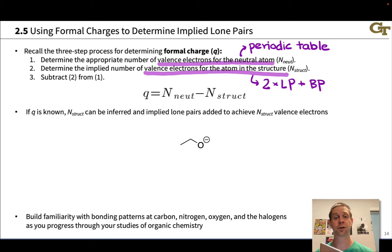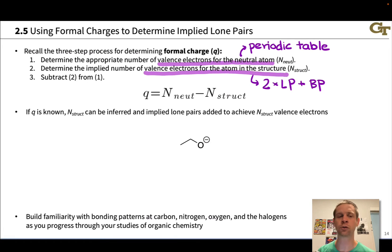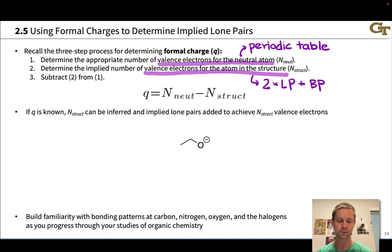Quite often in organic chemistry, we won't do this math. Formal charges will just be given, or we'll have a familiar bonding pattern that helps us imply what the formal charges are. We'll often go in the direction of knowing what the formal charge is but not being sure how many lone pairs are at a given atom where lone pairs have been omitted. If we know the formal charge, we can infer the number of valence electrons at the atom implied by the structure and add lone pairs to achieve that value.